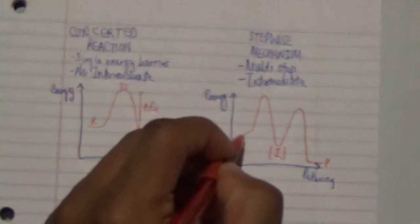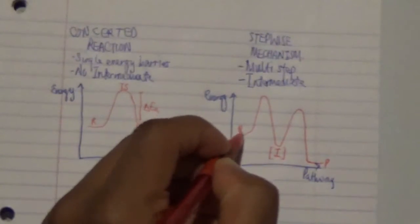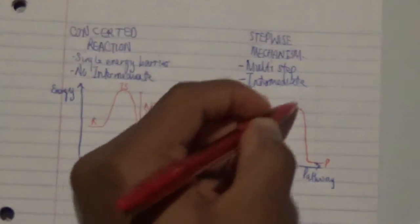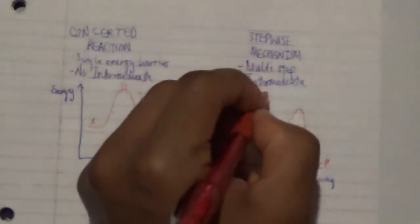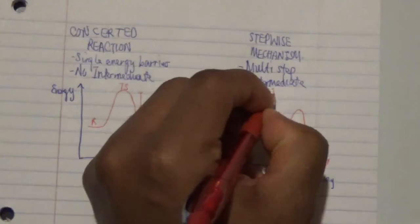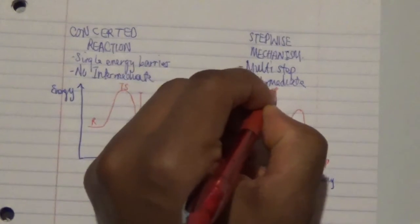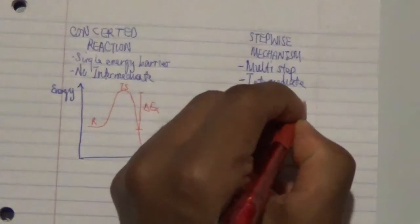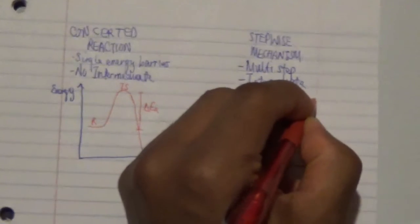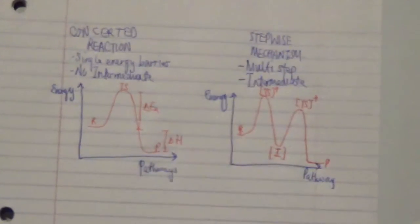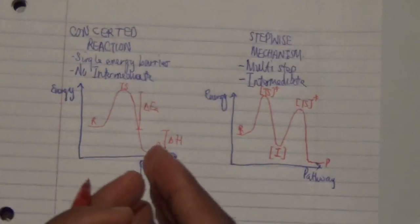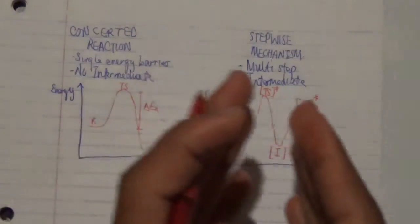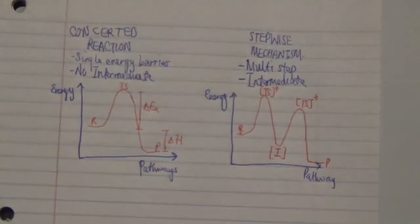The key feature here is the intermediate, which is consumed as the reaction proceeds to the final product. The product of the first step becomes the reagent of the next step. So we have the initial reagent, transition state one, the intermediate, transition state two, and finally the product — those are the key terms for cycloaddition reactions.